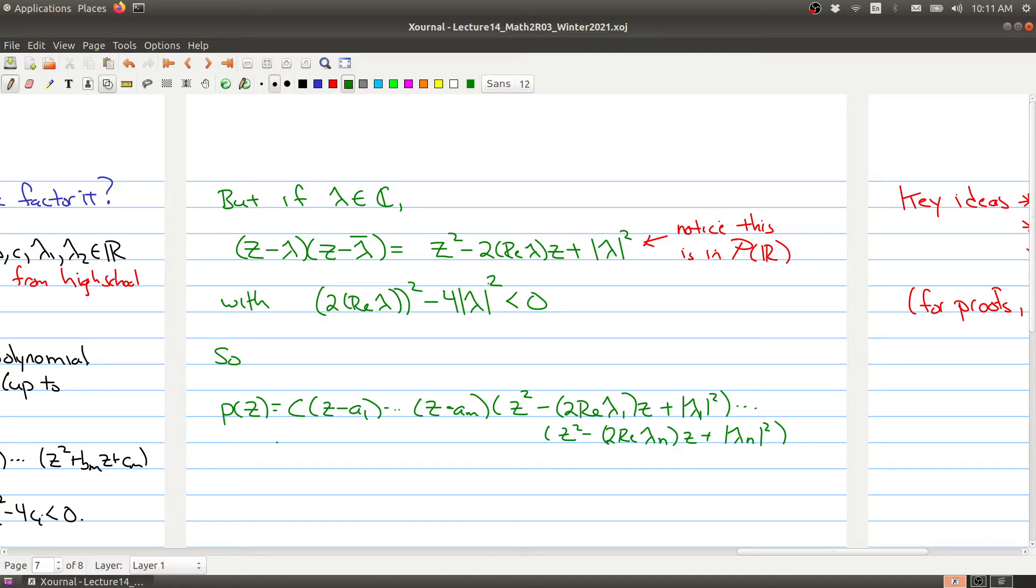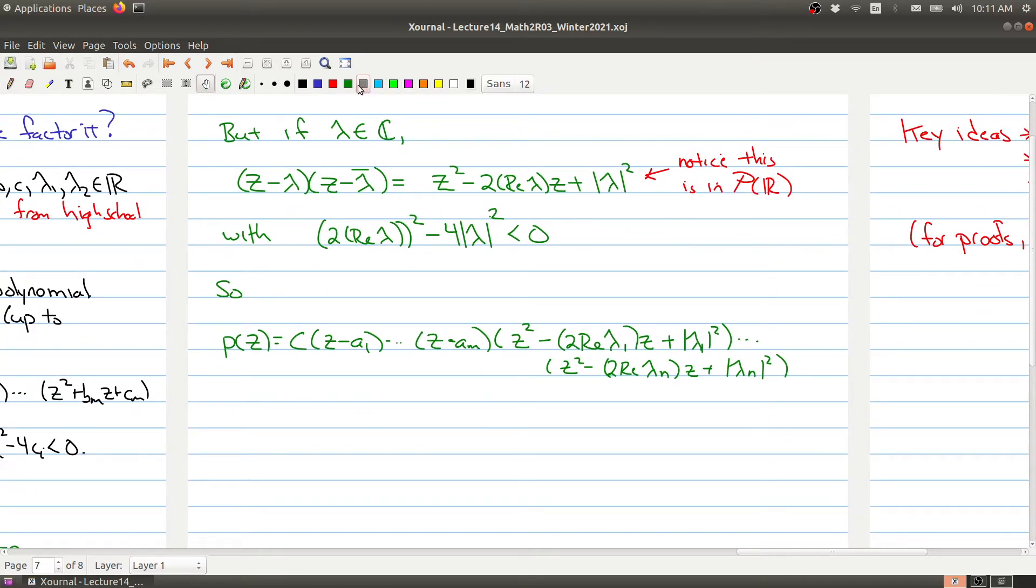So you can take the polynomial from the previous slide and use this fact to combine all those linear terms with complex coefficients, and you can make them all have real coefficients. So you combine them up and get z² - 2·Re(λ₁)·z + |λ₁|², and you do this for all the terms. So there you have the idea of the proof, because now we've written p as a product of linear forms and times a product of quadratic forms, where all the coefficients are inside of the real numbers. That's the rough idea of the proof. You should check all the details yourself, but that's really how things work.